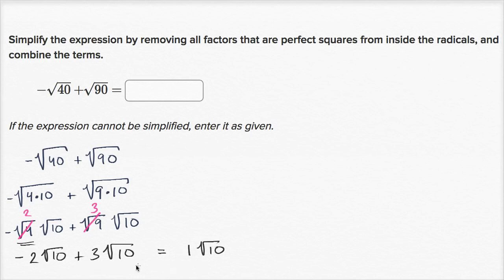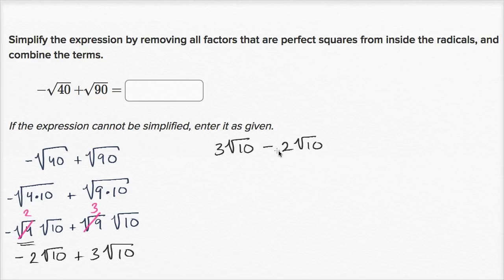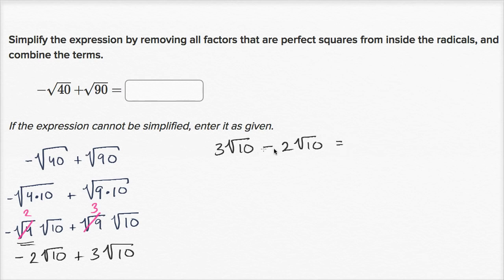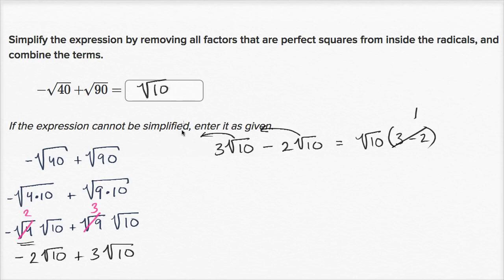Now if this last step doesn't make full sense, let me slow it down a little bit. I could rewrite it as 3 square roots of 10 minus 2 square roots of 10. If I have 3 of something and I take away 2 of that something — in this case the square roots of 10 — I'm going to be left with just 1 of that something, which we could write as the square root of 10. Another way to think about it: we could factor out a square root of 10, doing the distributive property in reverse. That would be the square root of 10 times (3 minus 2), which is just 1. So you're left with the square root of 10.